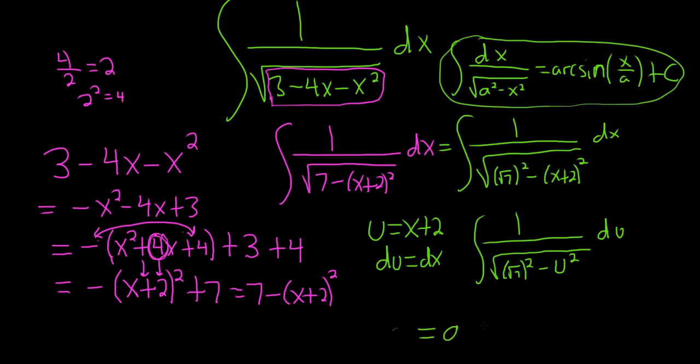So this is equal to arcsine of u over the square root of 7. But u is just x plus 2. So I'll just put x plus 2 over the square root of 7 plus c. You might be thinking, why did he even make a u sub?